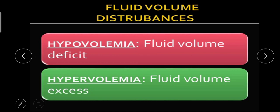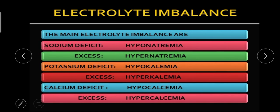Next is fluid volume disturbance. If fluid volume is deficit, meaning less, we call it hypovolemia. If fluid volume is excess, meaning more, we call it hypervolemia. Same for electrolytes: sodium deficit is hyponatremia, sodium excess is hypernatremia. Hypo means less and hyper means more. Potassium deficit is hypokalemia, potassium excess is hyperkalemia. Calcium deficit is hypocalcemia and calcium excess is hypercalcemia.